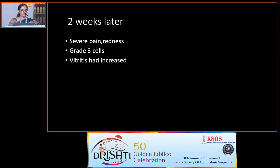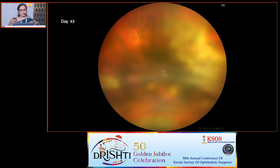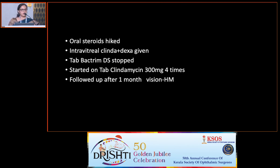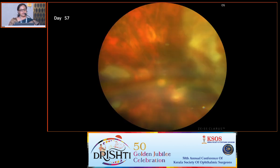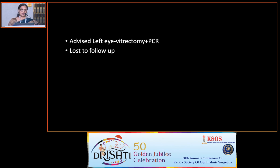Two weeks later she came back with severe pain and redness, 3+ anterior chamber cells, and increased vitreitis. We hiked up oral steroids, gave a repeat intravitreal clindamycin with dexamethasone, stopped Bactrim DS and started Tab Clindamycin. After one month her vision was only hand movements, retinitis patches at the macula were still present. At this point we decided to revise the diagnosis and advised vitrectomy with repeat PCR — but the patient chose to go elsewhere and was lost to further follow-up.